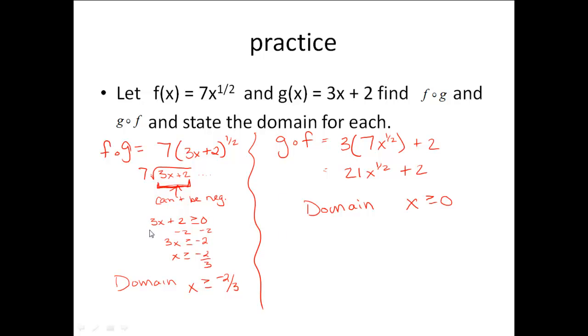So I set up the inequality, 3x plus 2 has to be greater than or equal to 0, and then I solve that. Subtract 2 from both sides, divide by 3. I don't need to flip the sign because it was dividing by a positive 3, and I find out that x has to be greater than or equal to negative 2 thirds. If I pick anything less than negative 2 thirds, I'm going to end up getting an imaginary number in here. So that's how I came up with that domain.